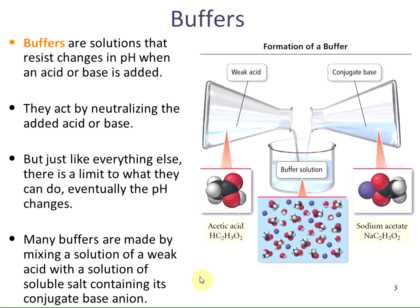We said that the bicarbonate helps to buffer the blood. But what are buffers? Buffers are solutions that resist changes in pH when an acid or a base is added, and they do this by neutralizing either the added acid or the added base. But there's a limit to what they can do, so eventually the pH is going to change. Many buffers are made by mixing a solution of a weak acid and a solution of a salt that contains the conjugate base.